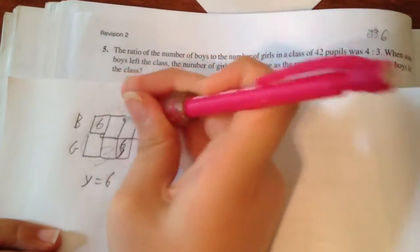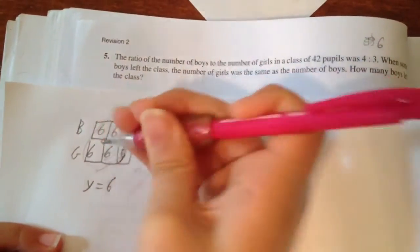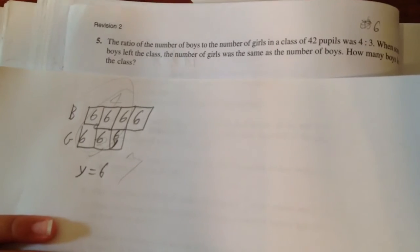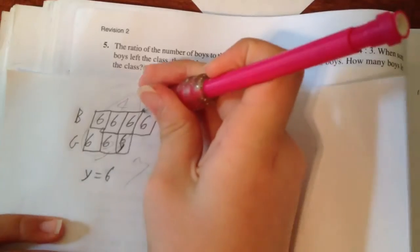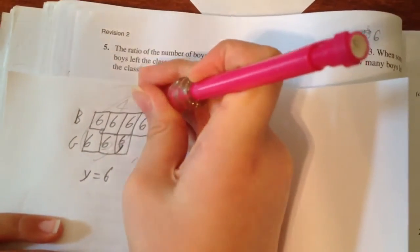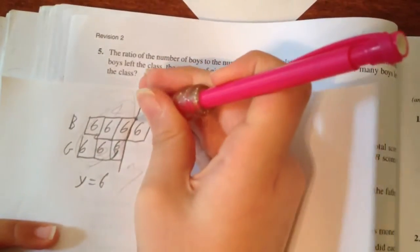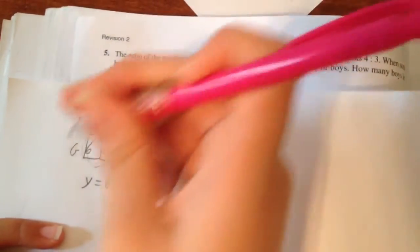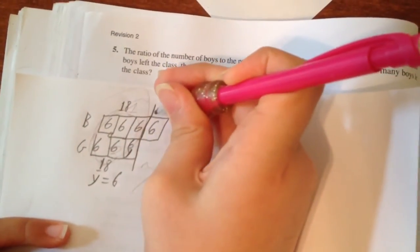Now we have 6 in every unit. When some boys left the class, the number of girls was the same as the number of boys. This question is not too tough. Because if I take this 6 off, they will be the same, 18 boys and 18 girls. So the answer to the problem is 6.